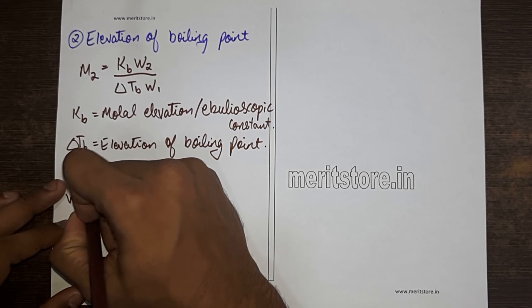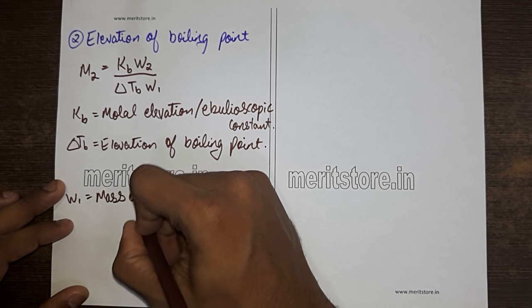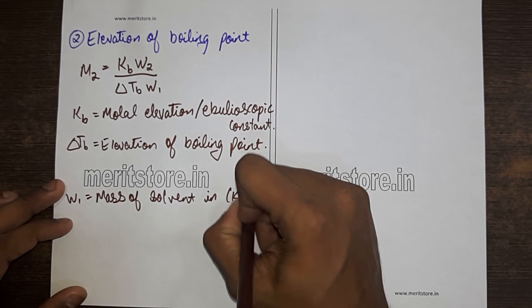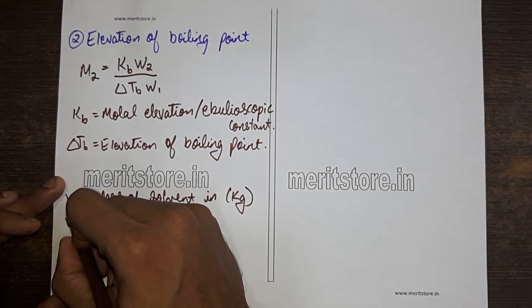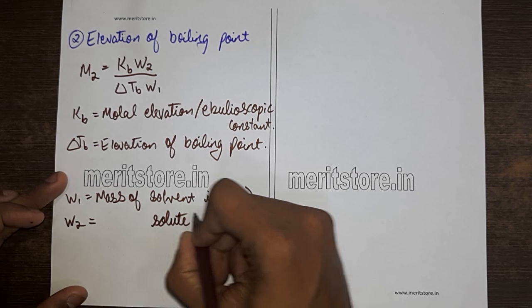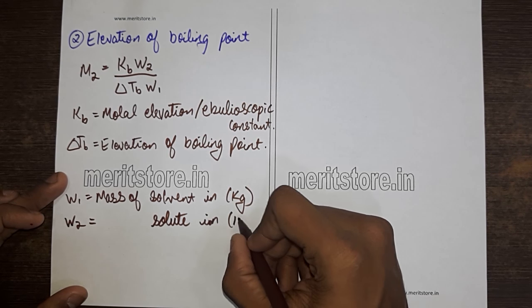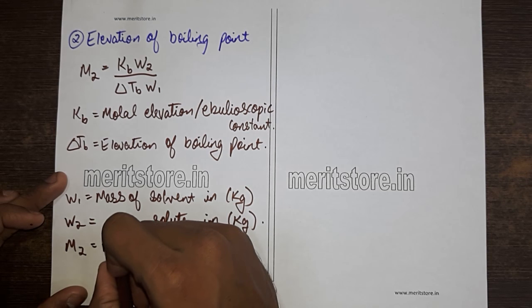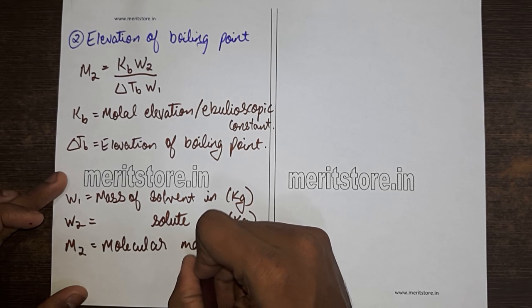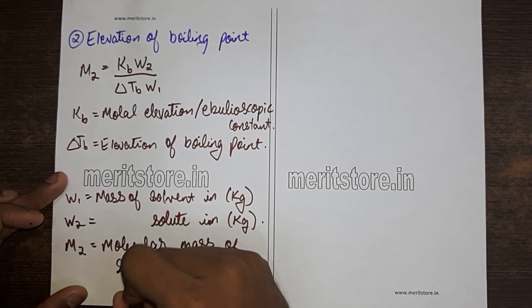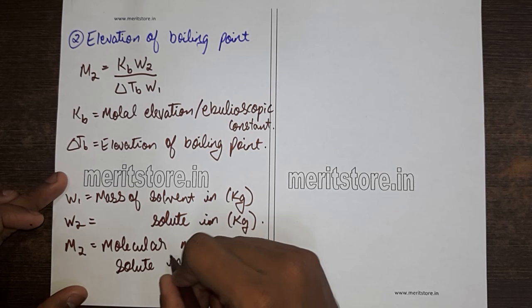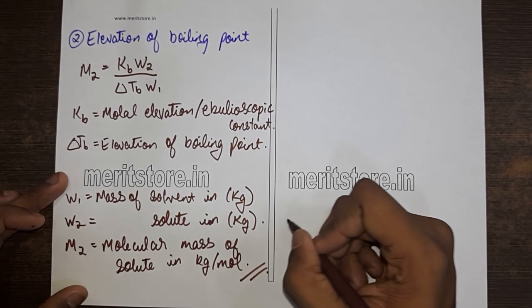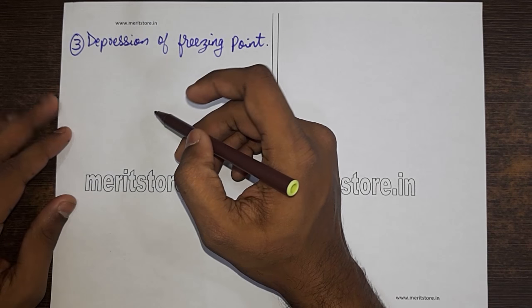w1 is equal to mass of solvent in kg, w2 is the mass of solute in kg, and m2 is the molecular mass of the solute in kg per mole.